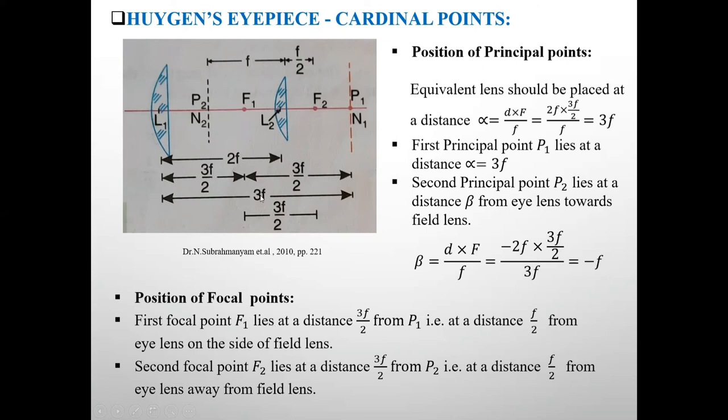So first focal point F1, this point F1 lies at a distance 3F by 2 from principal point P1. See here this distance 3F by 2.